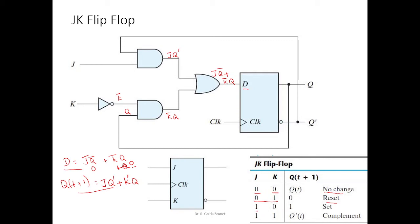When J=1 and K=0: J=1 gives Q̄ for the first term, and K=0 makes K̄=1, so the second term is Q. Therefore Q̄ + Q = 1. We supply 1 as input at time T, and at time T+1 we observe 1. Therefore this is the set state.